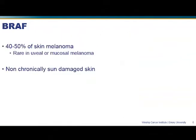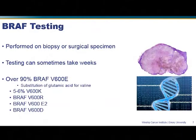A BRAF mutation is often present in about 40 to 50 percent of people who have a cutaneous or skin melanoma. People who have other types of melanoma — such as uveal melanoma occurring in the back of the eye, sinus melanoma, or mucosal melanoma — much less commonly have mutations in BRAF. It also often occurs in what we call non-chronically sun-damaged skin, tending to affect younger people who haven't had a lifetime of sun exposure, though there are always exceptions.